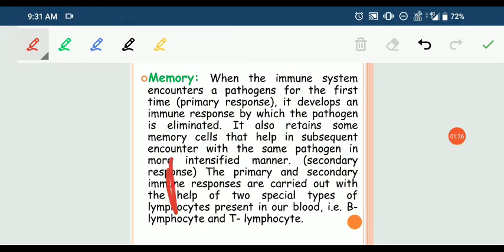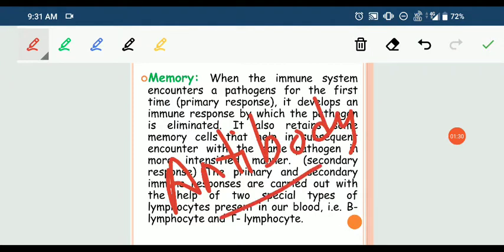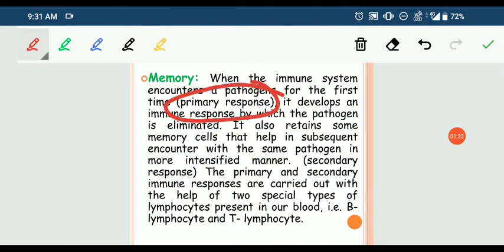They produce certain proteins which we call antibodies. These antibodies help to kill the pathogen, and this kind of response is known as primary response.